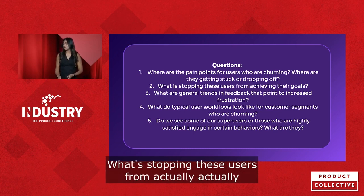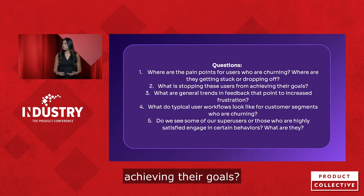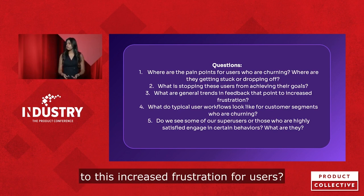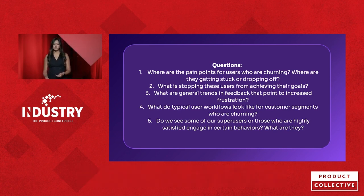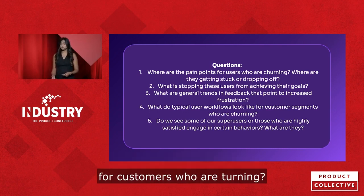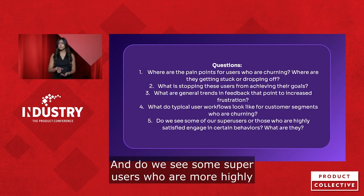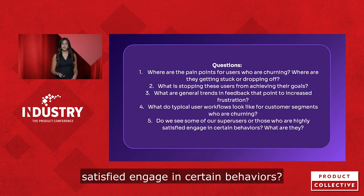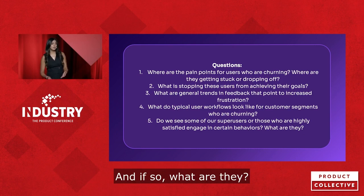What's stopping these users from actually achieving their goals? What are some general trends and feedback that point to this increased frustration for users? What do some typical workflows look like for customers who are churning? And do we see some super users who are more highly satisfied engage in certain behaviors, and if so, what are they?